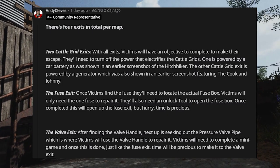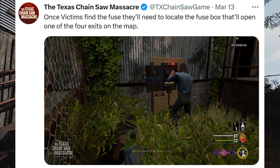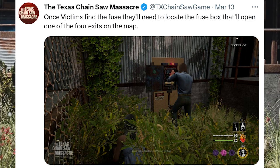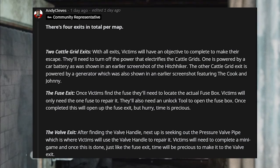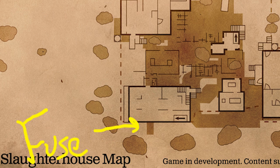Finally, the fuse exit. Once victims find the fuse, they'll need to locate the actual fuse box. Victims will only need one fuse to repair it, and they'll also need an unlock tool to open the fuse box. Once completed, this will open the fuse exit — but hurry, time is precious. I don't believe they actually show the fuse exit in this video, but on the map the shaded areas represent the basement. I believe this little tunnel area at the bottom of the map, where the arrow is, is where the fuse exit would be. I'm assuming that once you get the fuse, unlock the fuse box, install it, and do the minigame, you can open the gate and then run back down into the basement and exit through that little tunnel. If you look at all the maps, there's another shaded area that goes a bit outside the map, and I think that represents where the exit is in the basement.